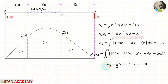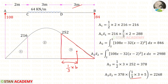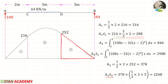Now let us find Area 3. It is a triangle with breadth 3 and height 252. Using (1/2)·b·h, Area 3 = 378. For x̄3, the centroid towards the left is (1/3)·breadth = (1/3)·3 = 1. But we are finding the centroid about point A, so we add the remaining distance: 1 + (2+3) = ... effectively x̄3 = 1 + 2 + 3 = 6. Therefore Area 3 · x̄3 = 378 · 6 = 2268.